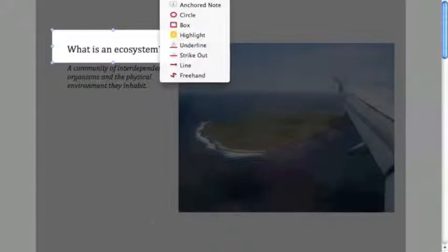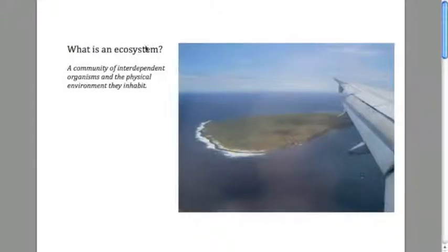If we look at what an ecosystem is, we can go into this basic definition that an ecosystem is a community of interdependent organisms and the physical environment they inhabit. So if we look at this example here, we could look at this island here in the Galapagos and say that an ecosystem could be everything in this picture, all the organisms in there.